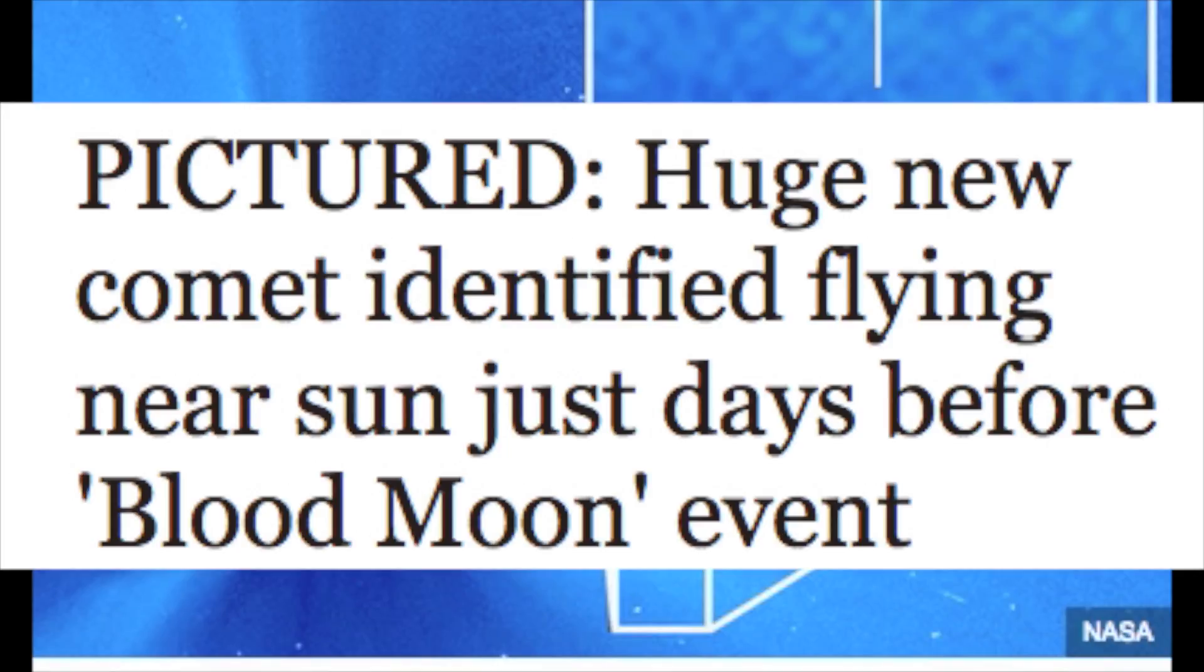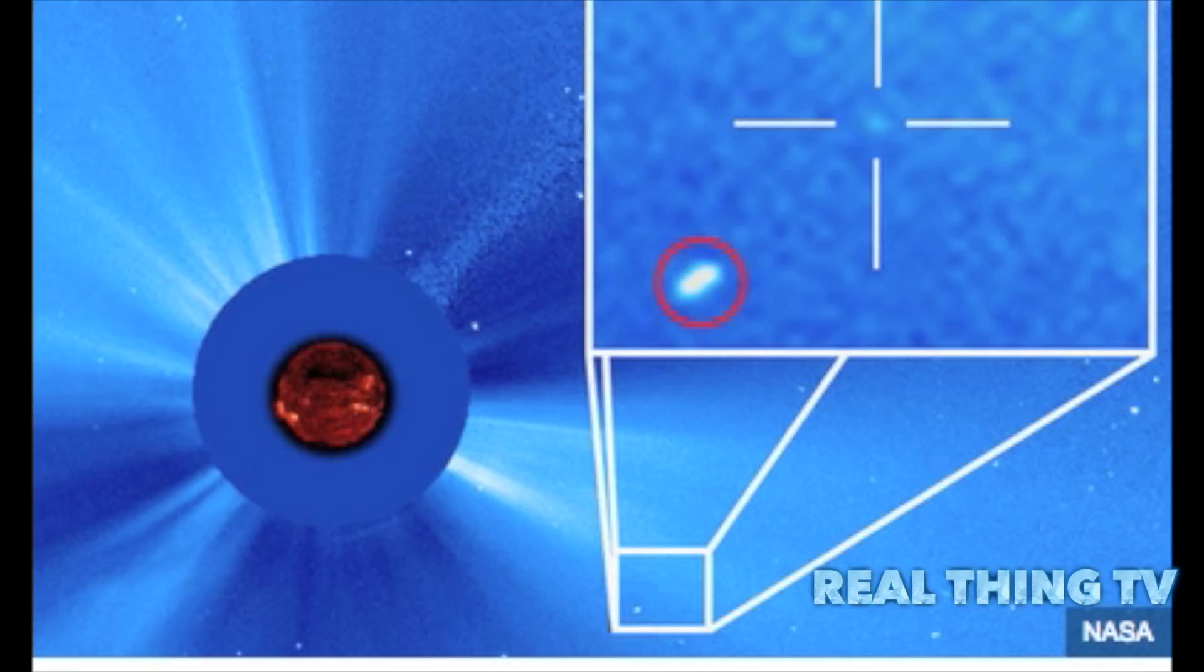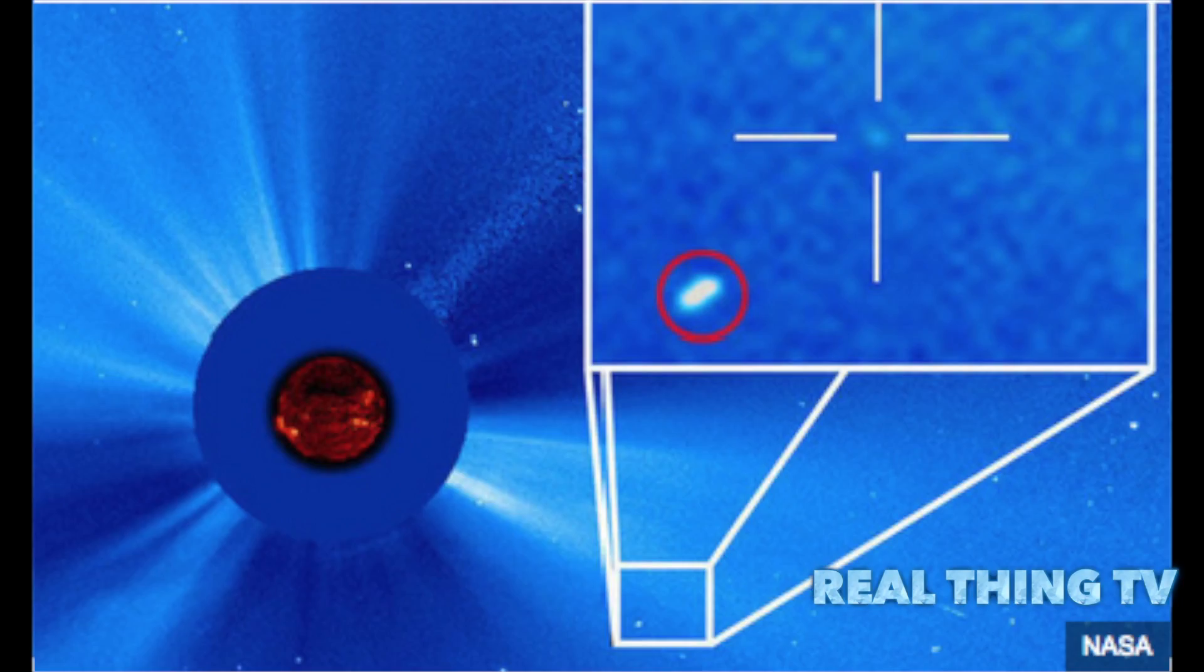A huge new comet identified flying near Sun just days before Blood Moon event. Astronomers have identified a previously unknown huge comet which can be seen flying through our solar system in this staggering image of the Sun.